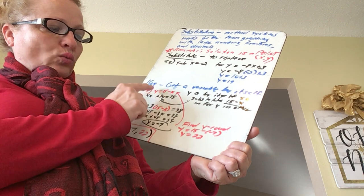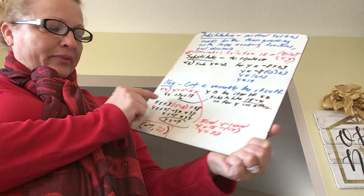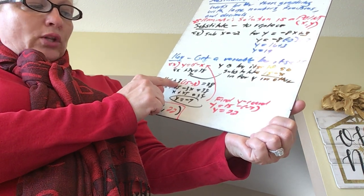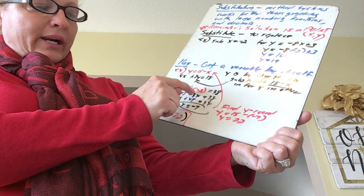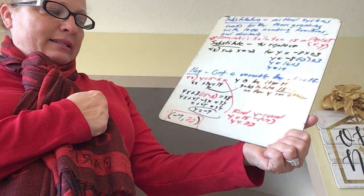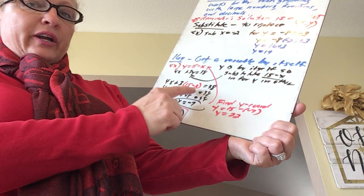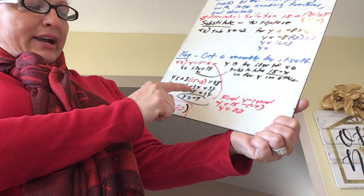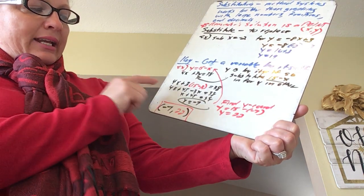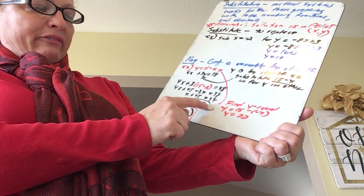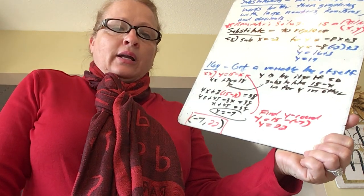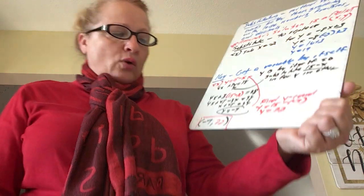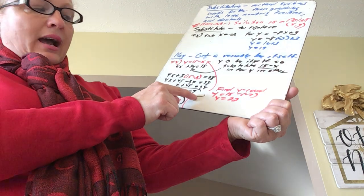Since y equals 15 minus x, we are going to take 15 minus x and substitute it in for y in the other equation — in other words, replace y with 15 minus x. So my second equation becomes 4x plus 3 times (15 minus x) equals 38. Now I have an equation with all one variable, everything in x, which means I can find the x coordinate. Distributing gives 4x plus 45 minus 3x equals 38. Combining like terms and subtracting 45 gives x equals negative 7.